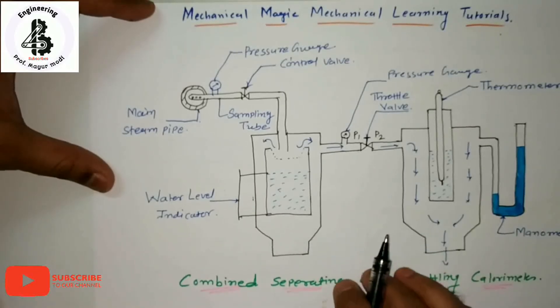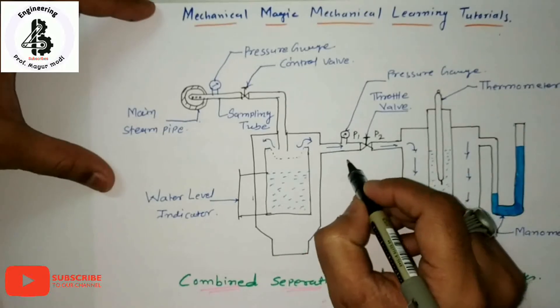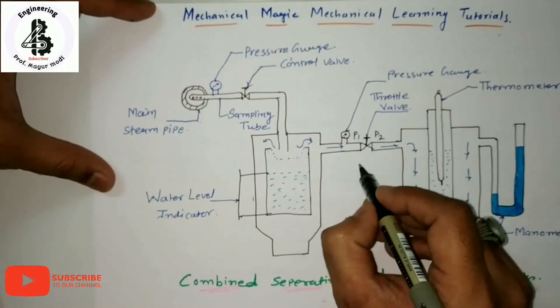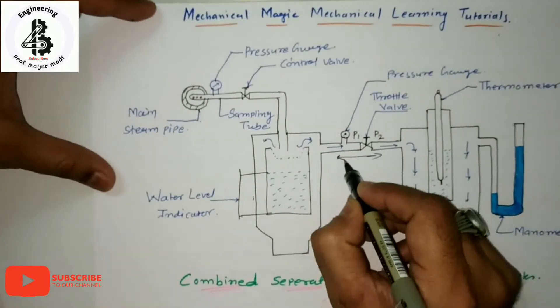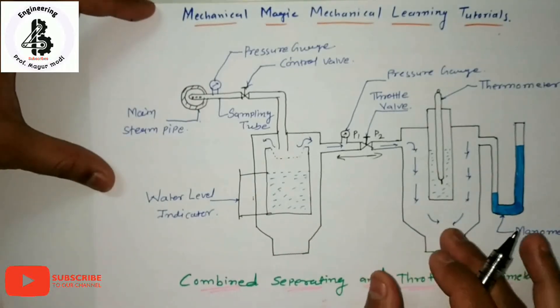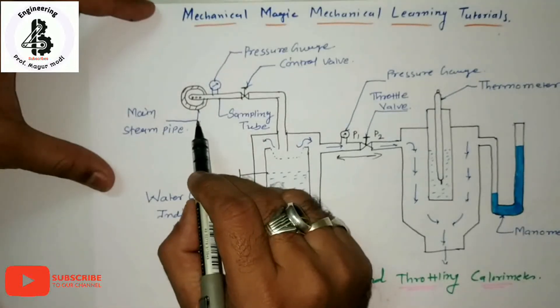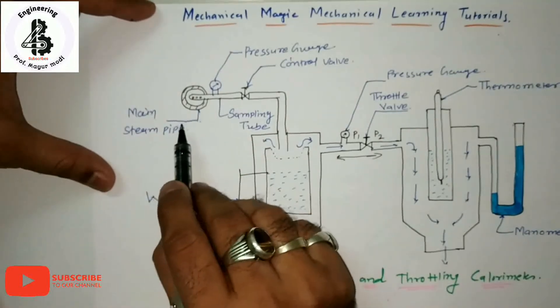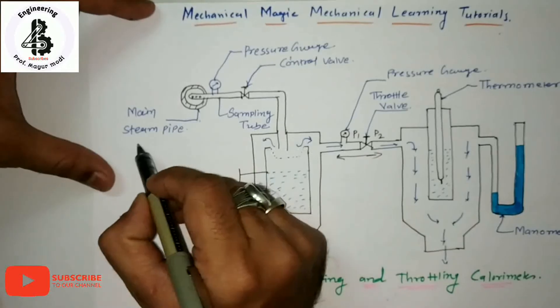In this calorimeter, the throttling calorimeter and separating calorimeter are placed in series making a product. In this, steam first passes through the separating calorimeter from the main streamline.